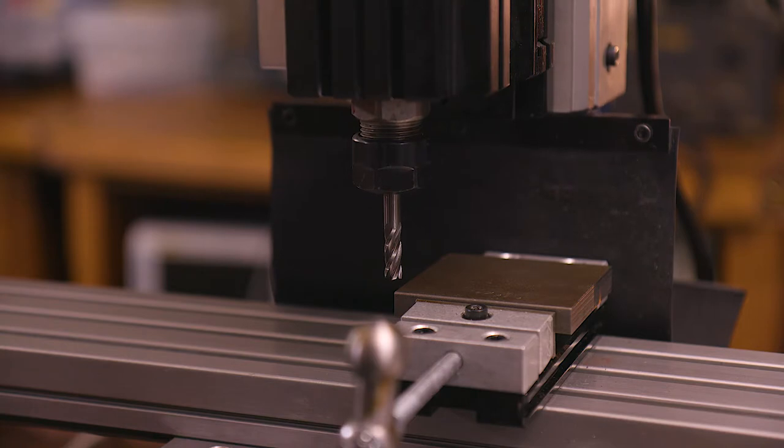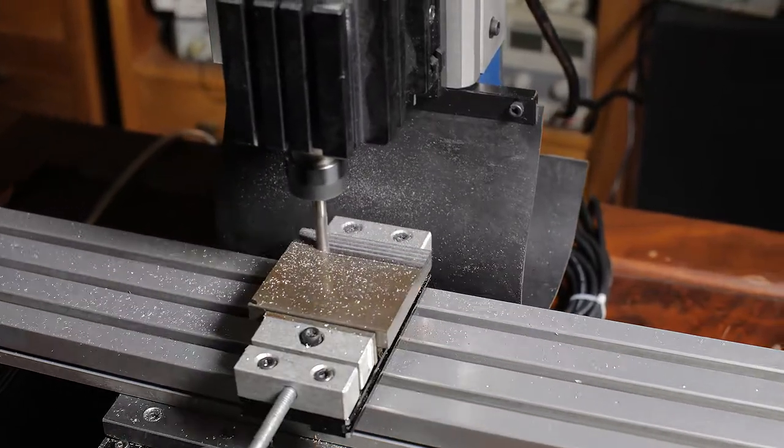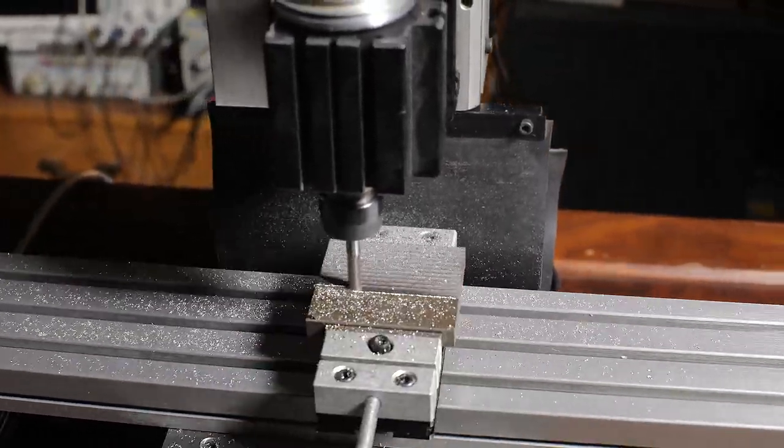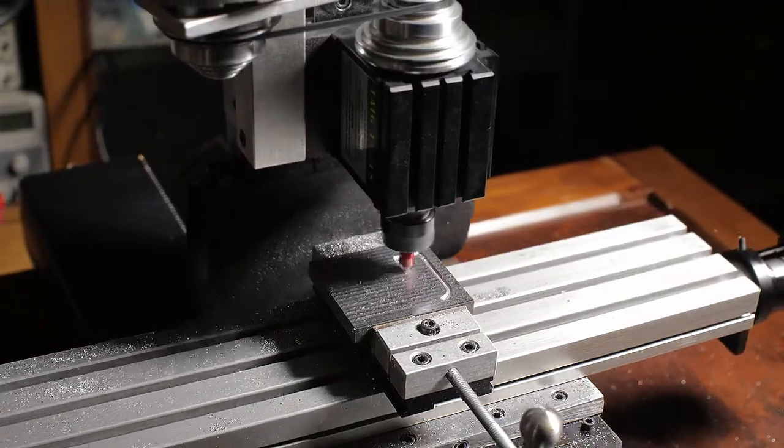I think we're ready. Let's cut it. First we'll do a facing operation using another Camotics program. Now we'll run the logo cutting operation.